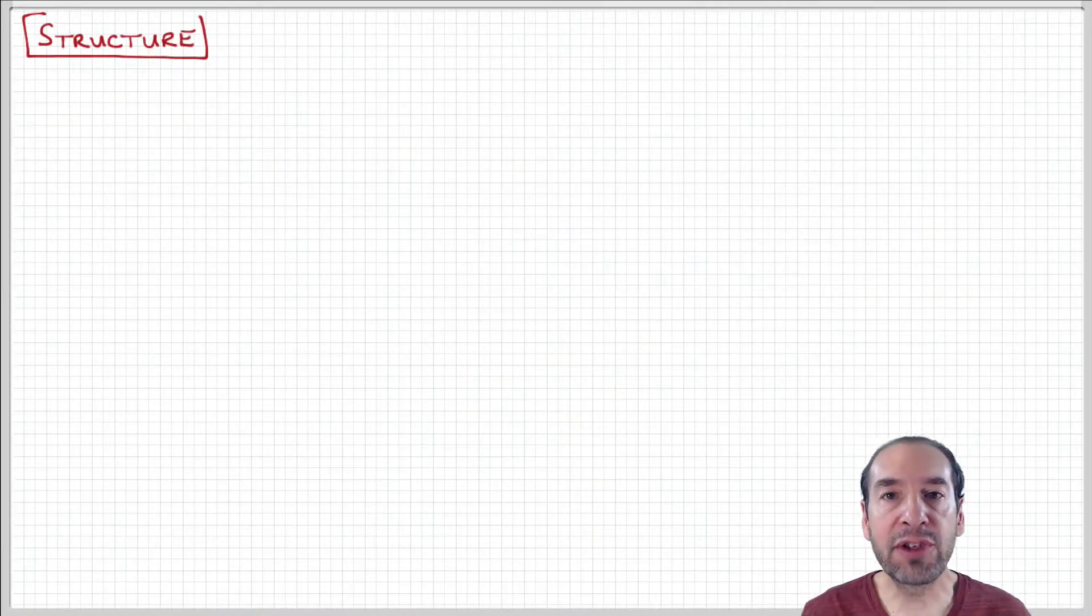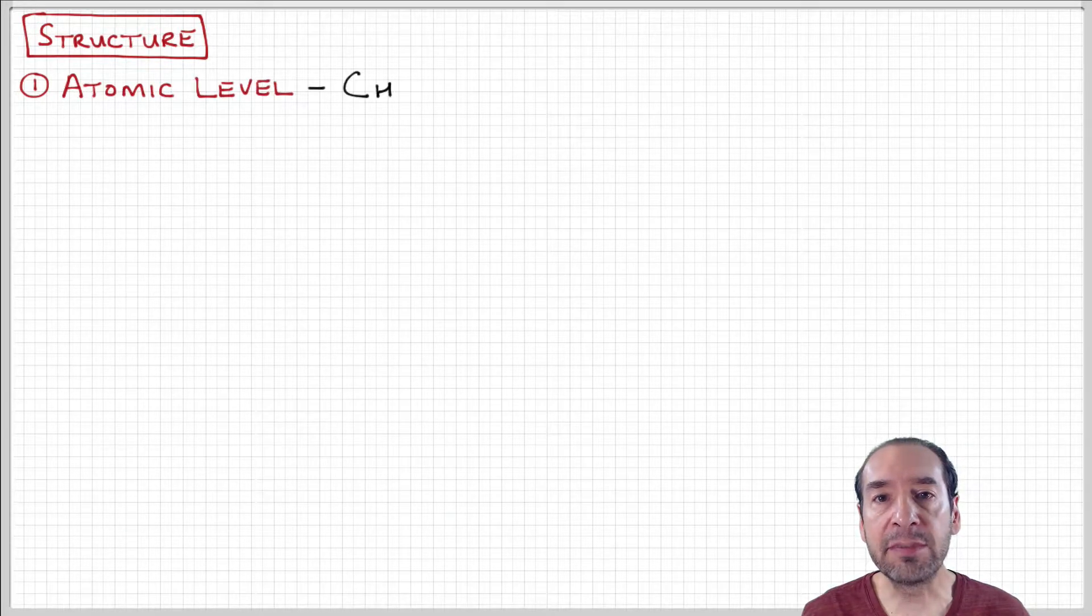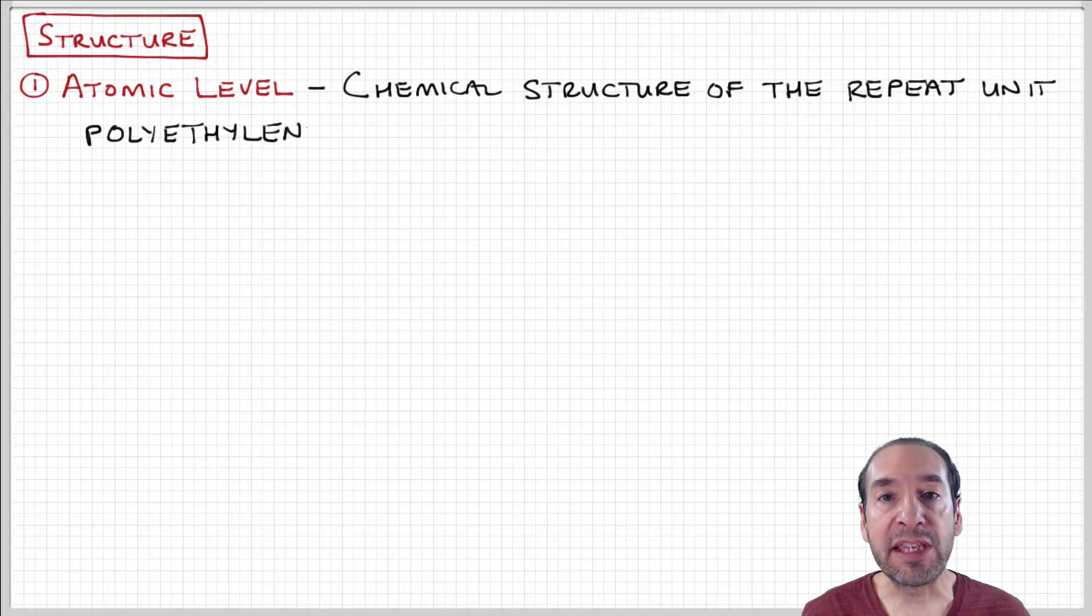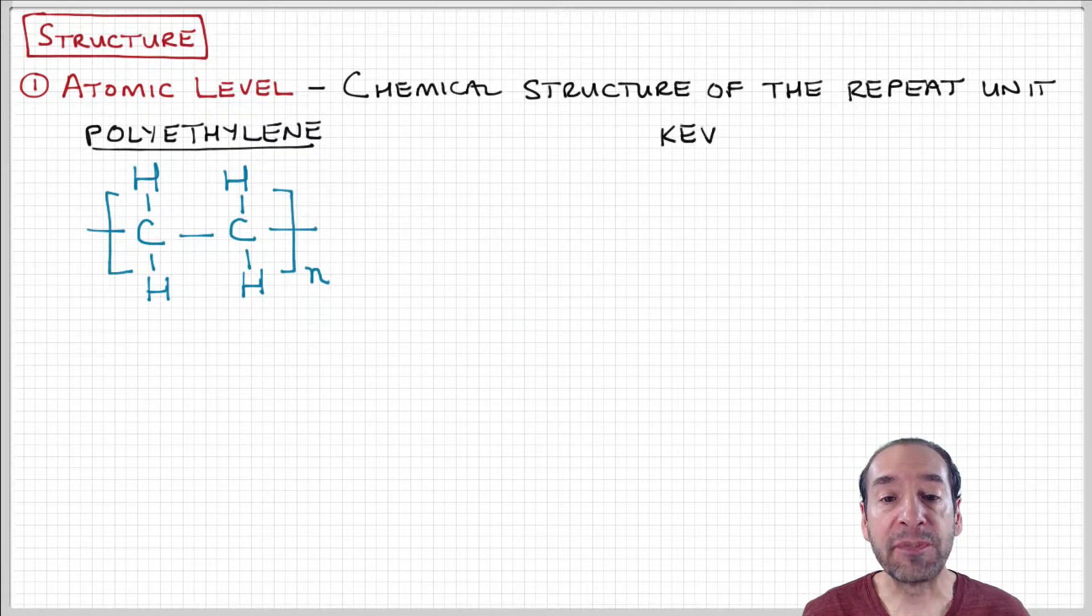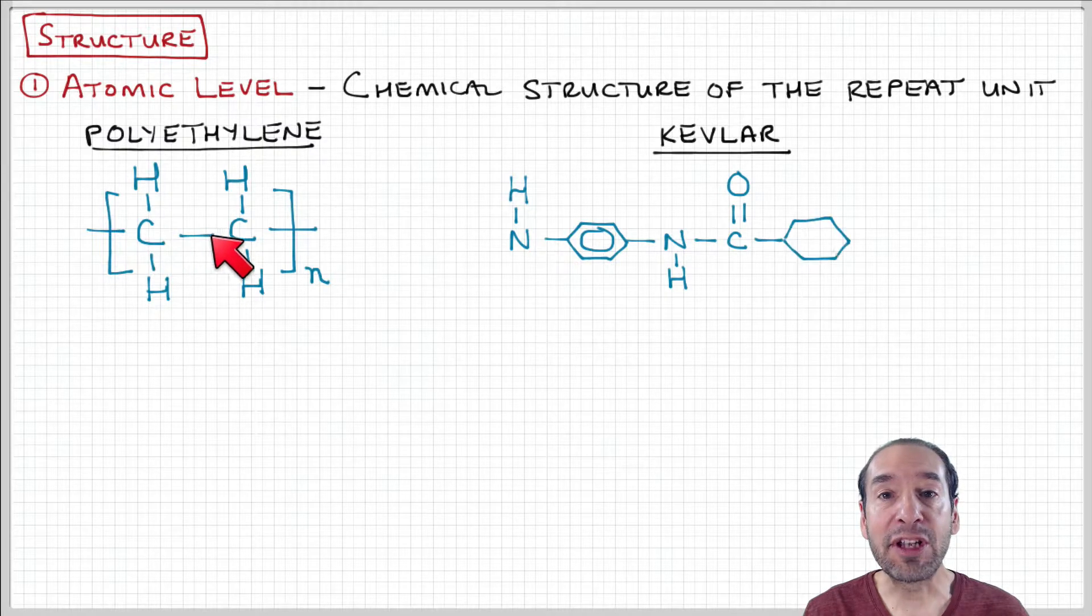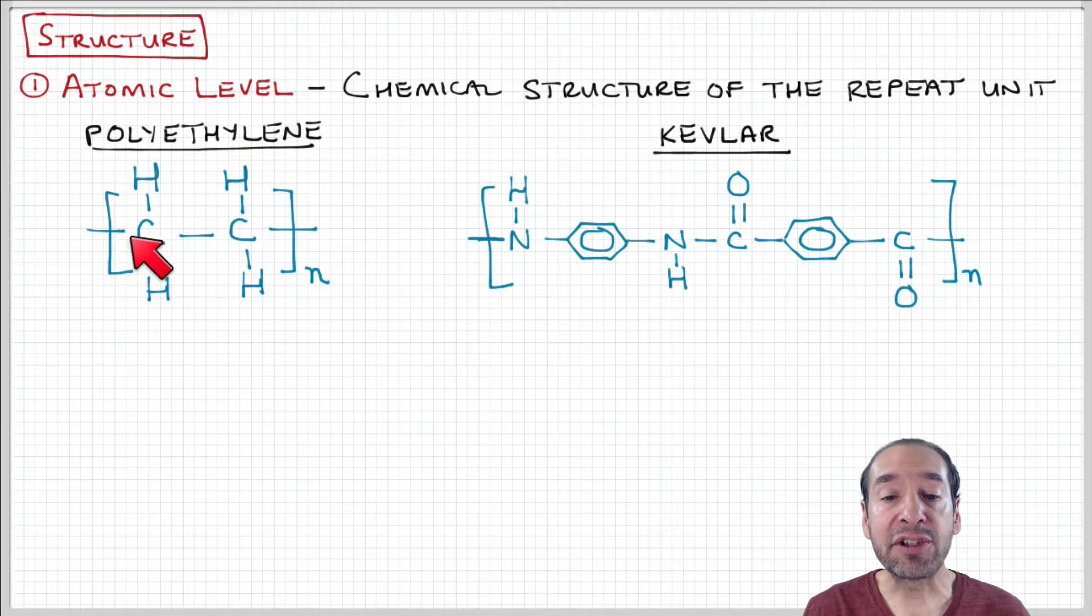One level of structure is the atomic level structure, which deals with the nature of the atoms on the polymer chain and how they're distributed. Polyethylene is an example of a simple polymer with a carbon backbone and hydrogen side groups.